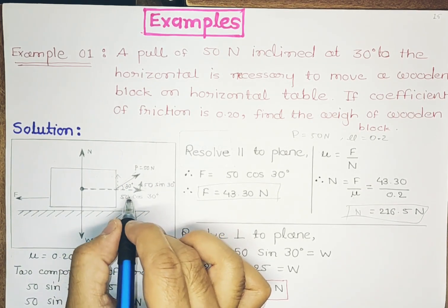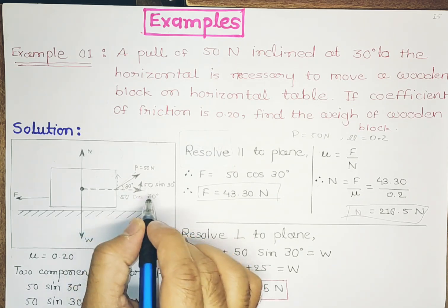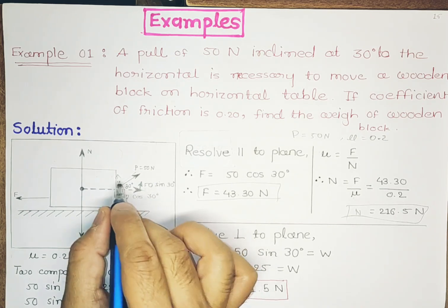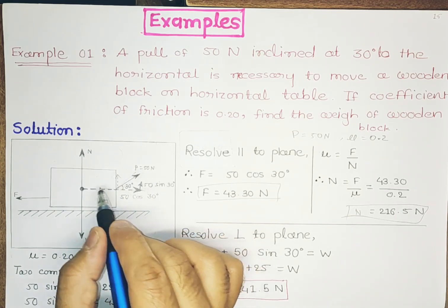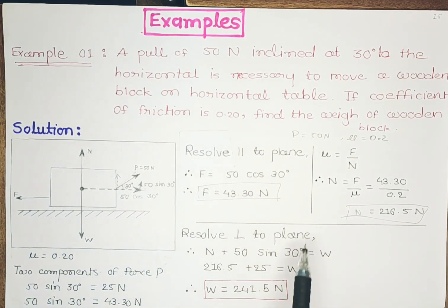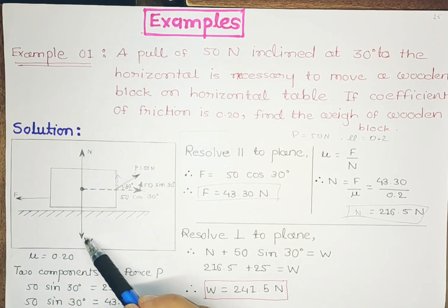That will be 50 sin 30° due to the opposite side. It is 50 sin 30° acting upwards. So there are two forces acting upwards: N and 50 sin 30° will be equal to forces which are going downwards, that is W. So N plus 50 sin 30° is equal to W. Now we have got the value of N, substituting in from this equation we can directly find out the weight by making W the subject.